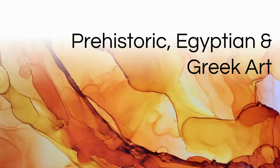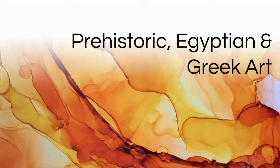We are moving in a linear fashion — starting with prehistoric and moving forward in time. You can't talk about prehistoric, Egyptian, and Greek art without understanding what came before. For example, if we were going to talk about Impressionism, we have to know what happened before that made Impressionism possible.